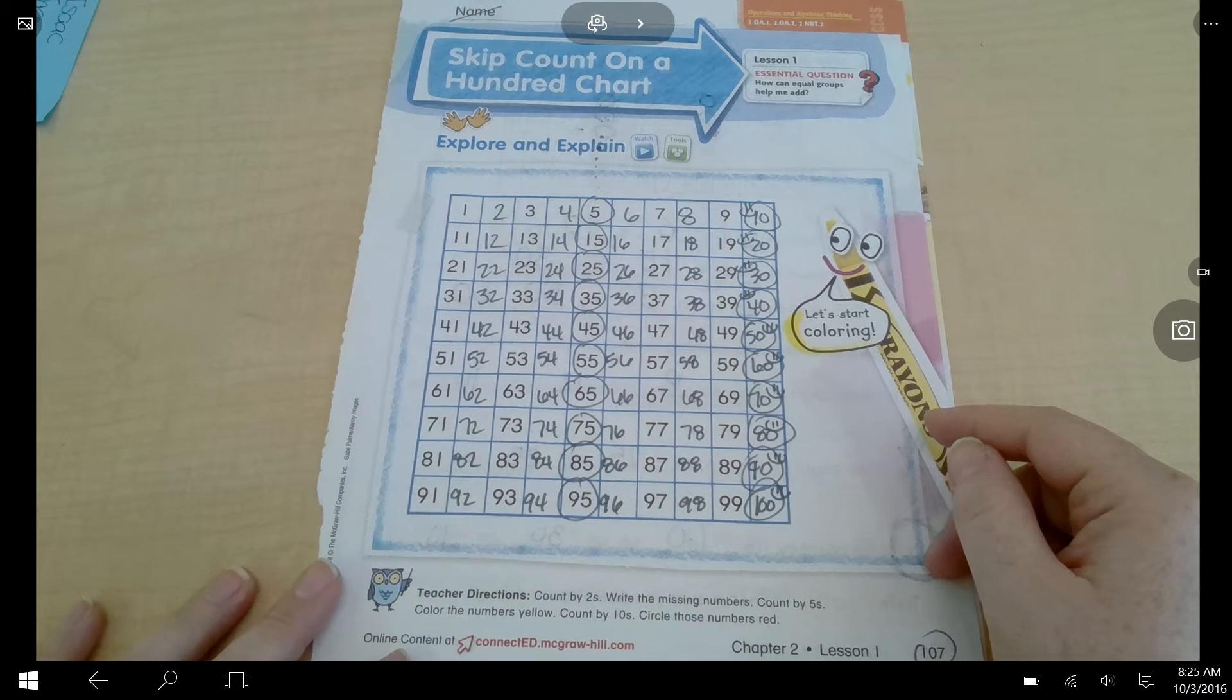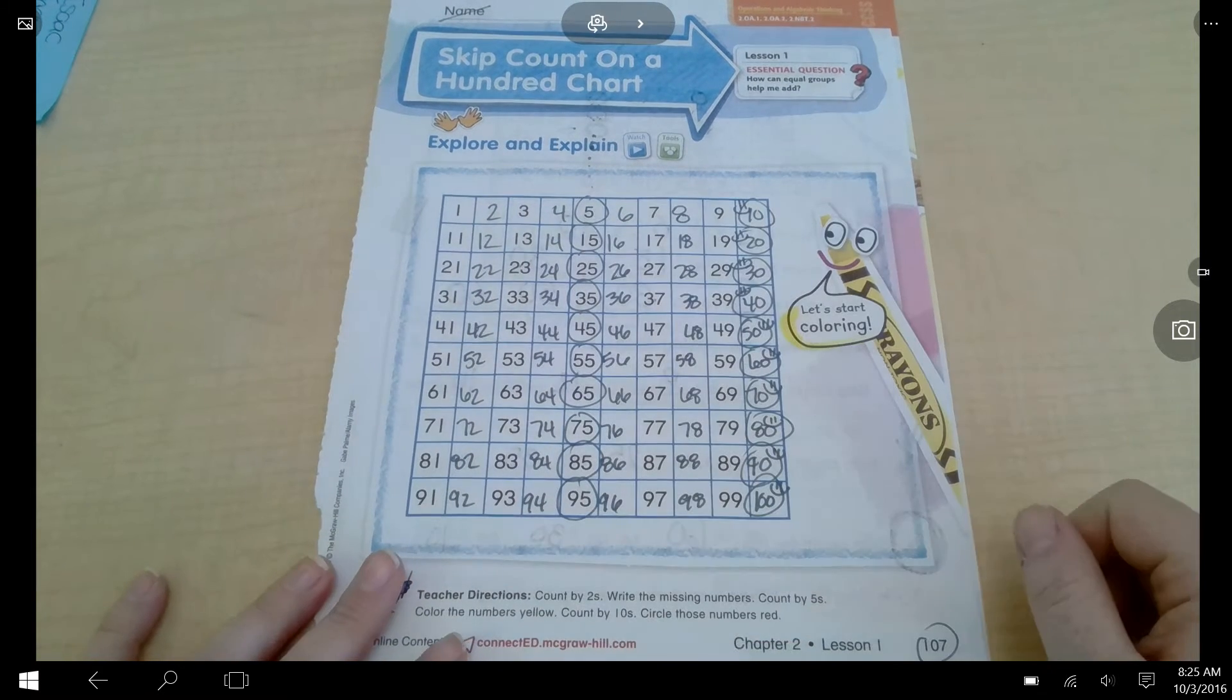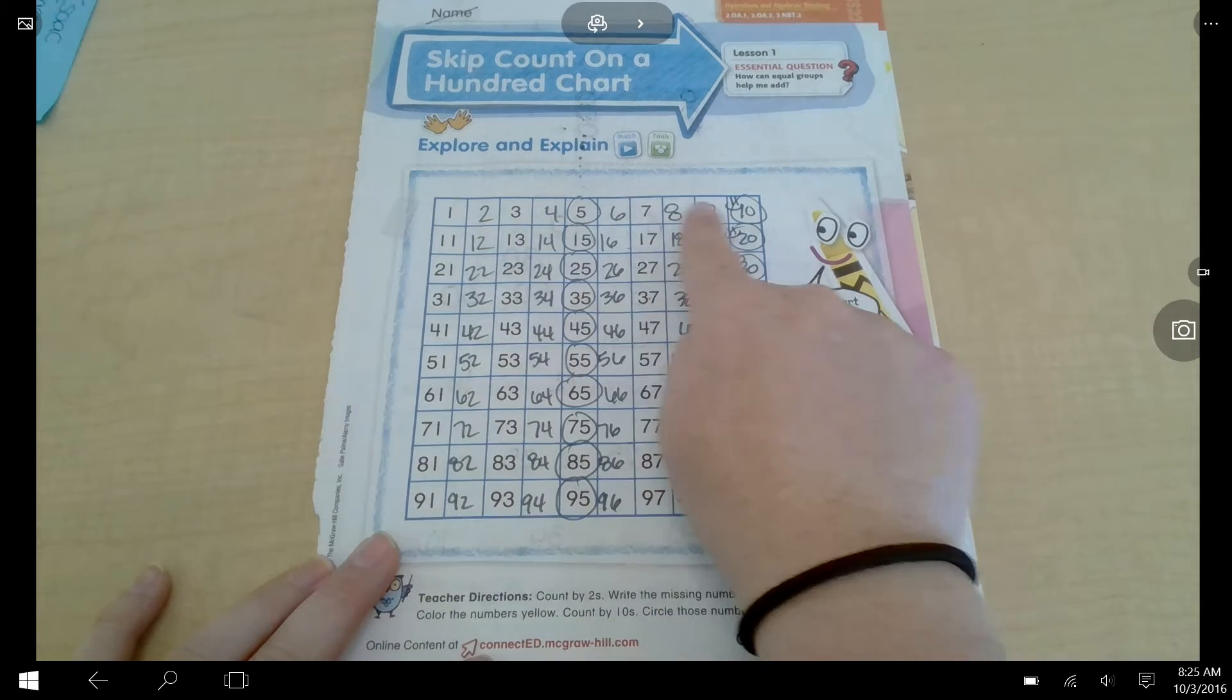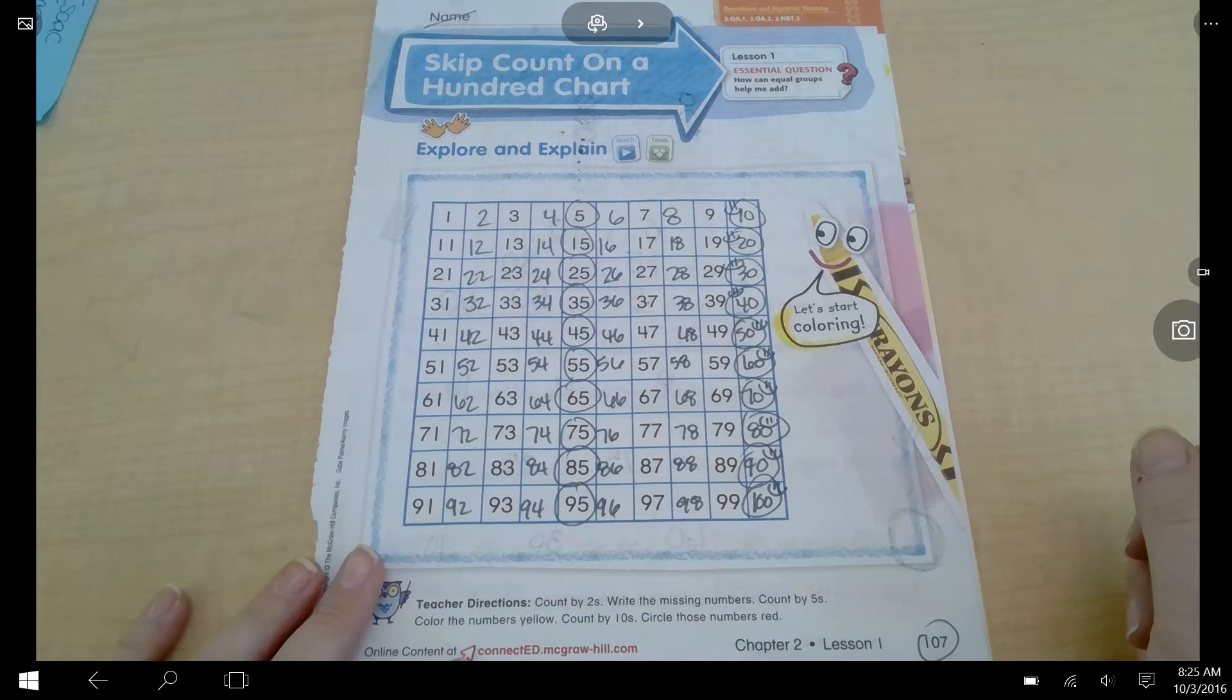You should have noticed you were counting by twos. That was all the even numbers, 2, 4, 6, 8, 10. Then it asks you to circle all of the fives when you skip count by fives. 5, 10, 15, 20, 25, 30. I went ahead and finished that pattern for you.